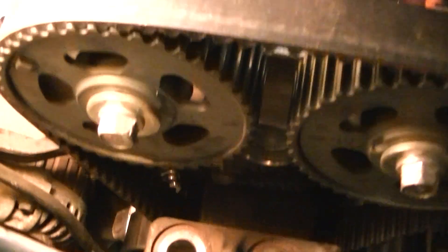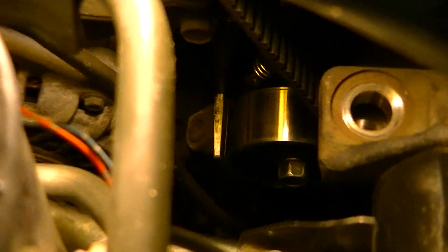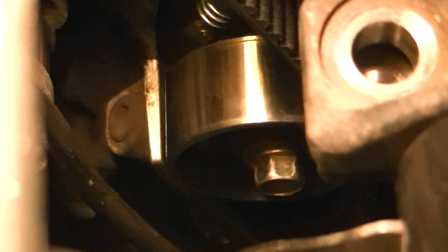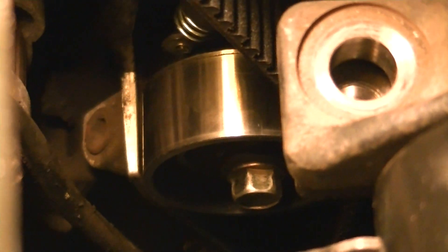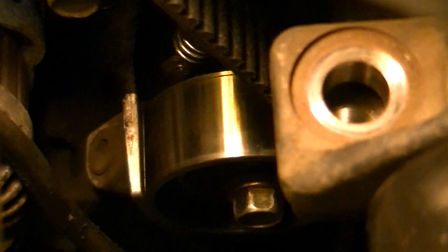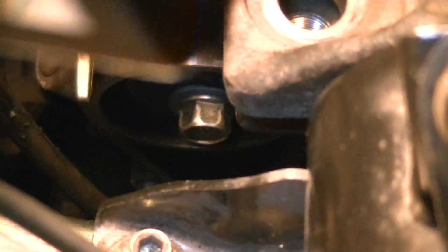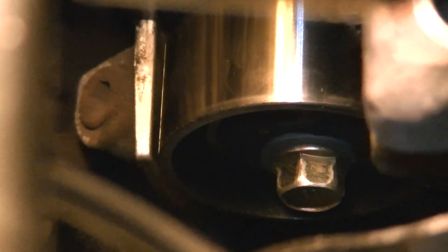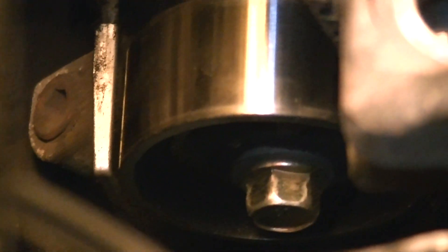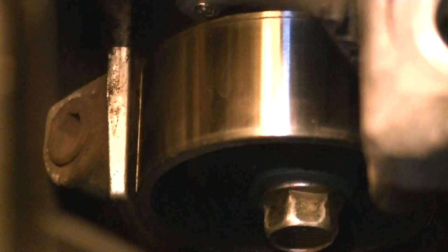That holds tension on the belt. It's down on the other side towards the rear of the car. Right there. That one pivots and that's the one that holds tension on the belt.